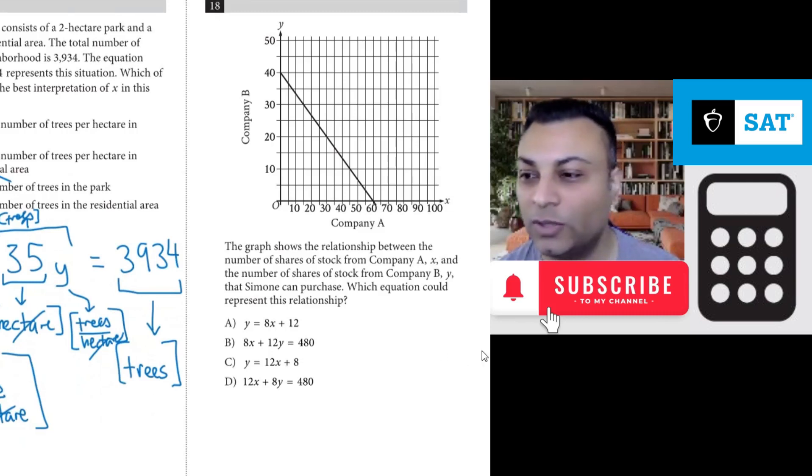Number 18, the graph shows the relationship between the number of shares of stock from company A, which is x, and the number of shares of stock from company B, which is y, that Simone can purchase. Which equation could represent this relationship?